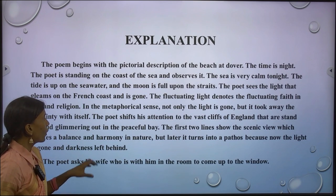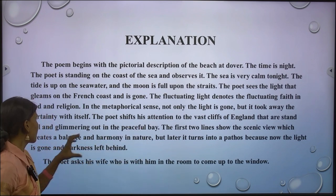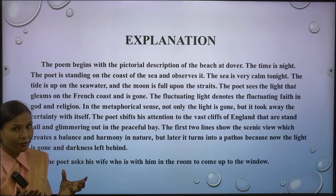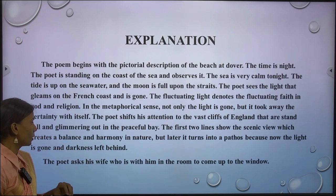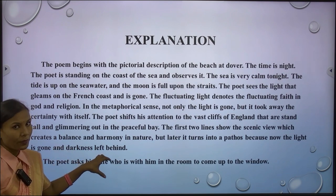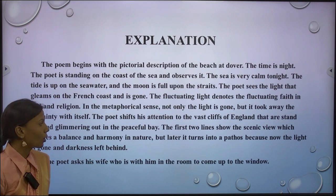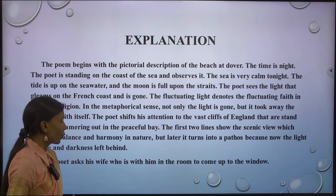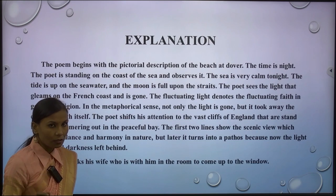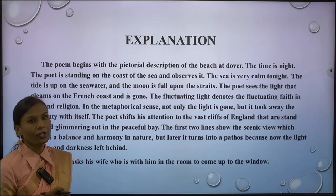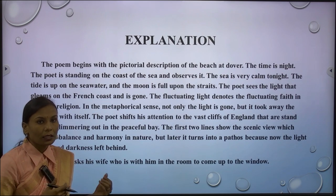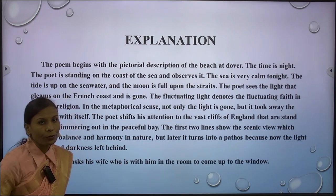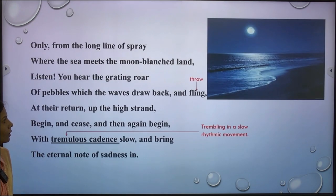The poet shifts his attention to the vast cliffs of England standing tall and glimmering out in the peaceful bay. The first two lines present a scenic view while the later part creates balance and harmony in nature, but it turns into pathos as the light is gone and darkness came. The poet asks his wife, who is with him in the room, to come to the window to see the beautiful scene of the sea.